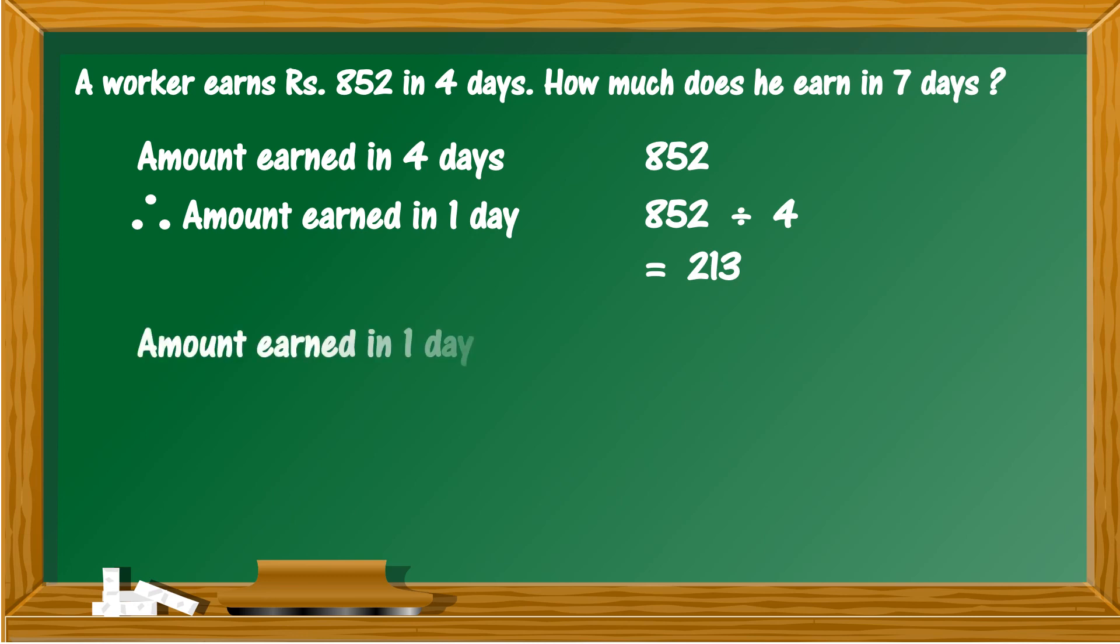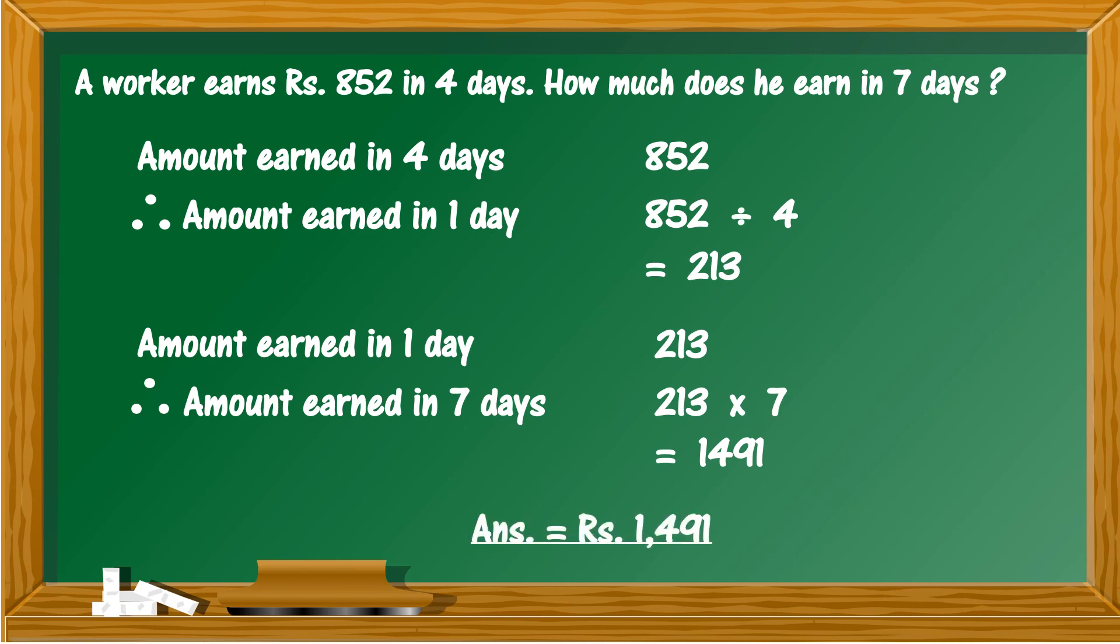Then use multiplication. Amount earned in one day is rupees 213, therefore amount earned in seven days is 213 into 7, and the answer is rupees 1491.